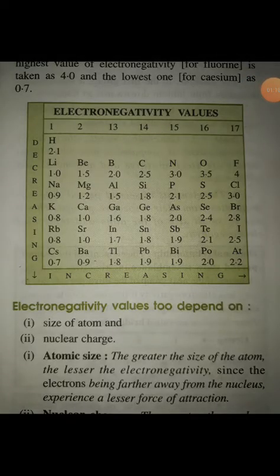In the Linus Pauling table, electronegativity values are shown. Group 1 contains hydrogen, lithium, sodium, potassium, rubidium, and cesium — down the group it decreases. Hydrogen has electronegativity 2.1 and cesium has 0.7. Moving left to right: lithium 1.0, beryllium 1.5, boron 2.0, carbon 2.5, nitrogen 3.0, oxygen 3.5, and fluorine 4.0. Fluorine has the highest electronegativity of all elements — the halogens have the highest values.